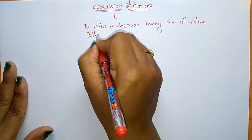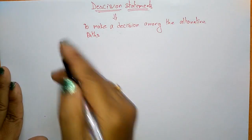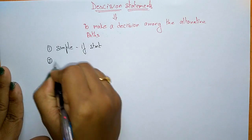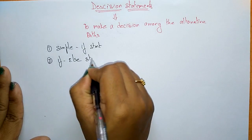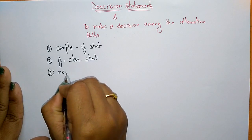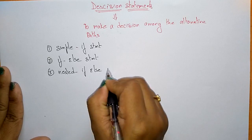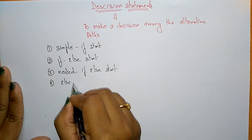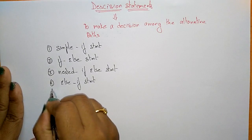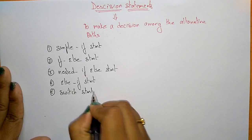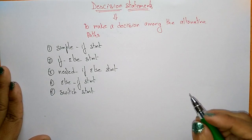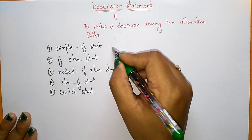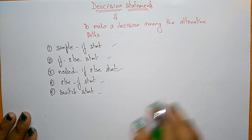The five different decision statements are: the simple if statement, the if-else statement, the nested if-else statement, the else-if statement, and the switch statement. These are the five different decision statements in C programming, used to make decisions among different paths.